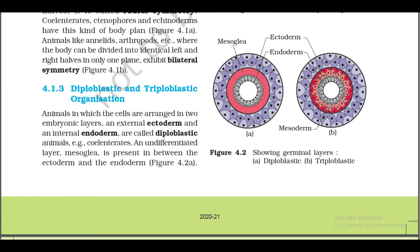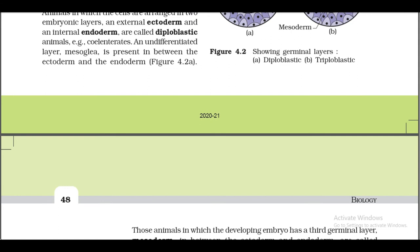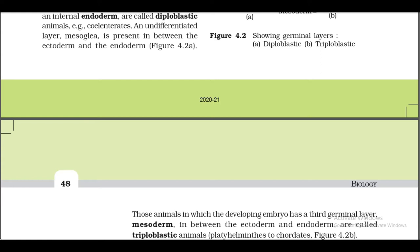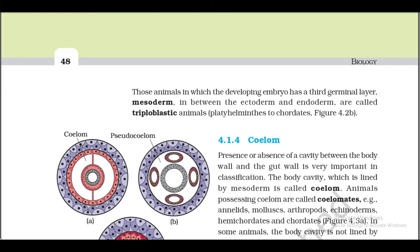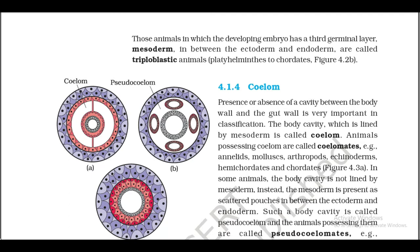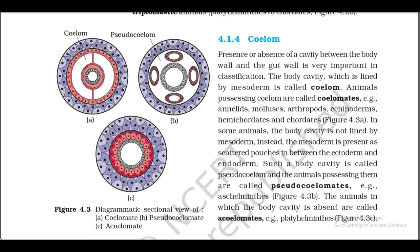4.1.3 Diploblastic and Triploblastic Organization. Animals in which the cells are arranged in two embryonic layers — an external ectoderm and an internal endoderm — are called diploblastic animals. Example: coelenterates. An undifferentiated layer, mesoglea, is present between the ectoderm and endoderm (Figure 4.2, showing germinal layers: a diploblastic, b triploblastic). Those animals in which the developing embryo has a third germinal layer, mesoderm, in between the ectoderm and endoderm are called triploblastic animals.